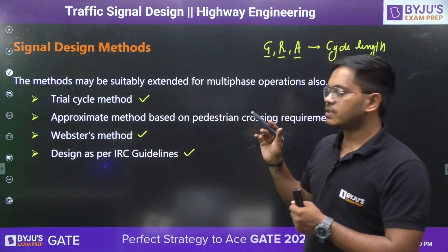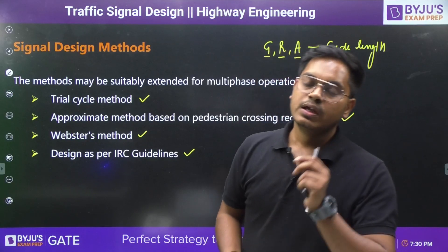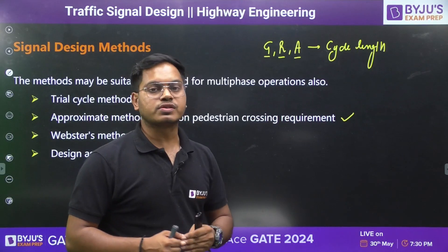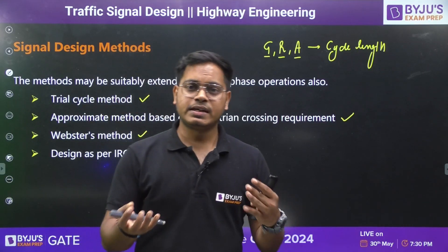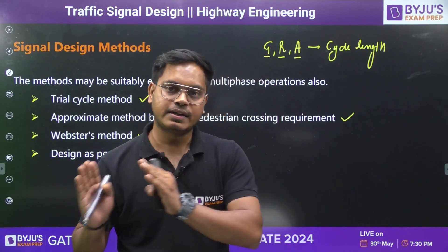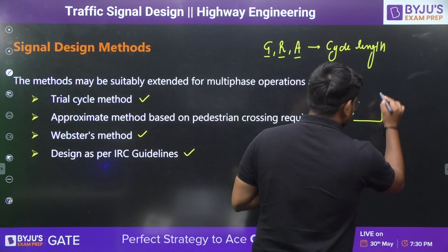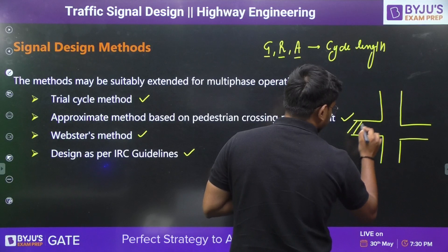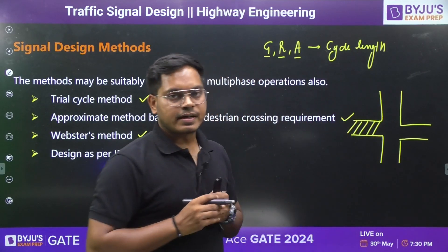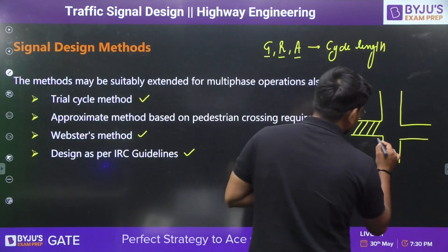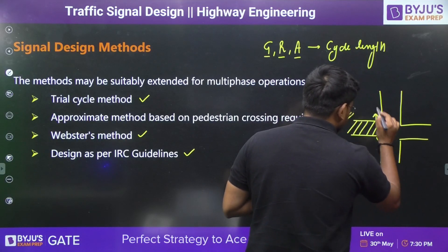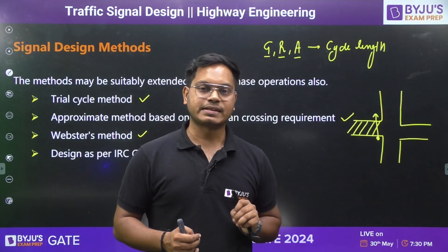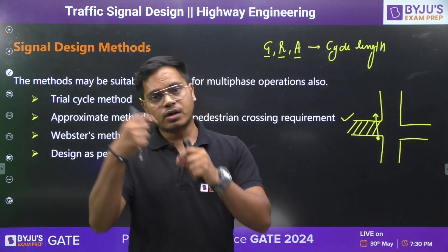In the second method — the approximate method — it is based on approximations. Another thing is that it is not based on vehicles, but on pedestrian crossing requirements. They are basically interconnected. Suppose you have an intersection: if there is a red light for vehicles on one road, definitely the pedestrians will be having the green light, because they can simply cross the road when vehicles are not passing. Green light for pedestrians is nothing but red light for vehicles on the same road.